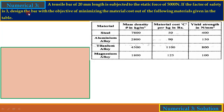We have to design the bar, meaning we have to find out the cross section. Assuming the bar has a circular cross section, we need to find the diameter. The objective of this design is to design the bar such that the cost of material is minimum — that is, the objective of optimization is minimization of material cost.